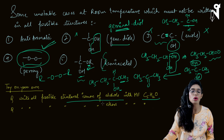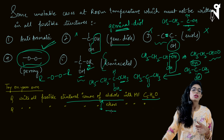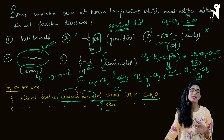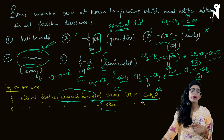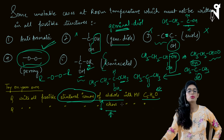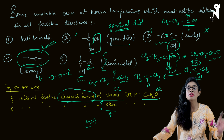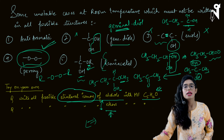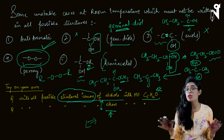Practice questions: Write all structural isomers of alcohol with molecular formula C5H12O. Alcohols are functional isomers of ethers, so they share the same molecular formula. Write all possible isomers — chain, positional, or any type — that can be formed with this formula. Do the same for ethers. Draw all possible isomers and note the total number.